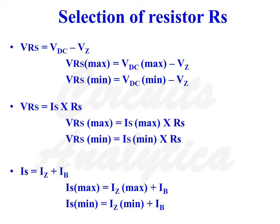Applying KCL at the base of the transistor, IS equals IZ plus IB, and IS max equals IZ max plus IB. The output current is always 40mA, so the base current IB equals 40mA divided by beta, which is 0.4mA.